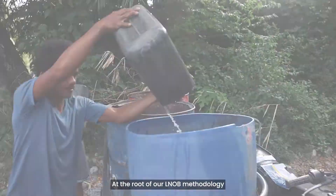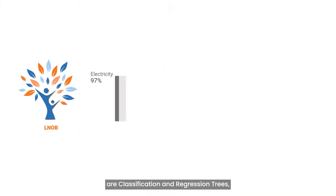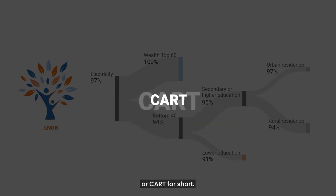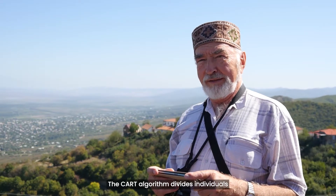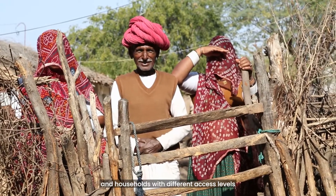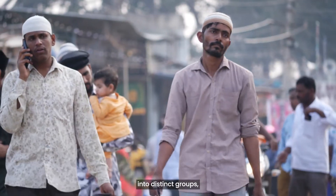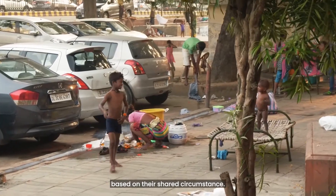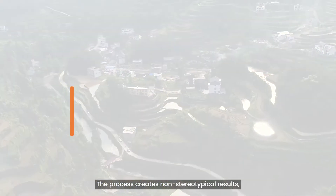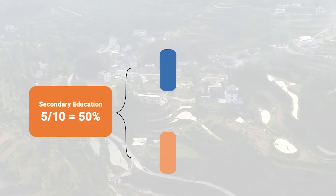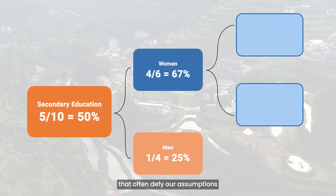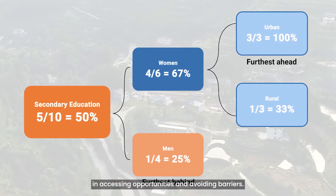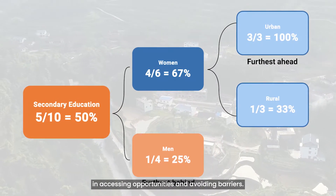At the root of our LNOB methodology are classification and regression trees, or CART for short. The CART algorithm divides individuals and households with different access levels into distinct groups based on their shared circumstances. The process creates non-stereotypical results that often defy our assumptions about who the furthest behind and furthest ahead are in accessing opportunities and avoiding barriers.